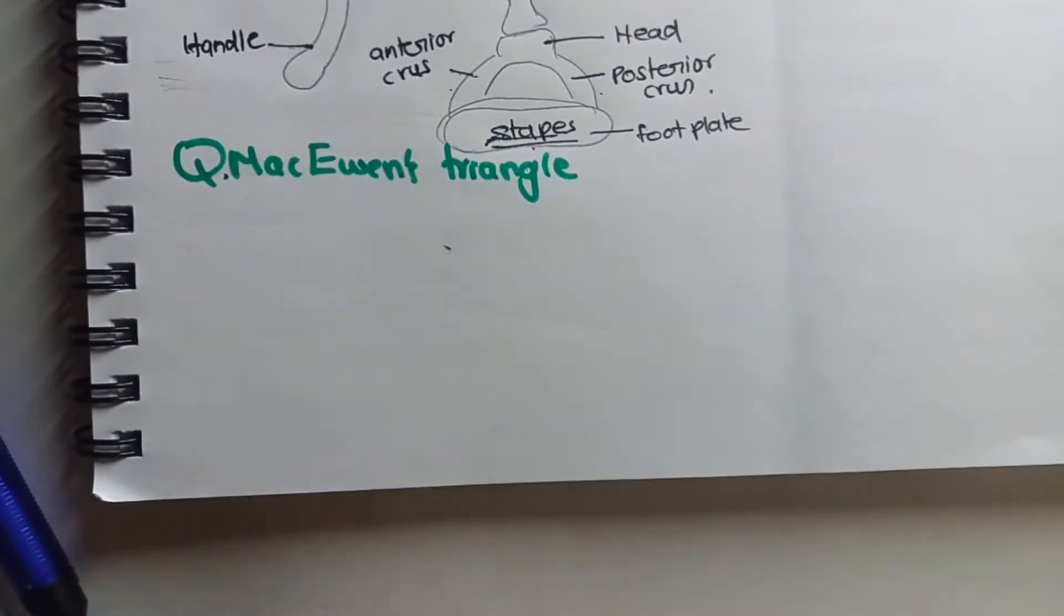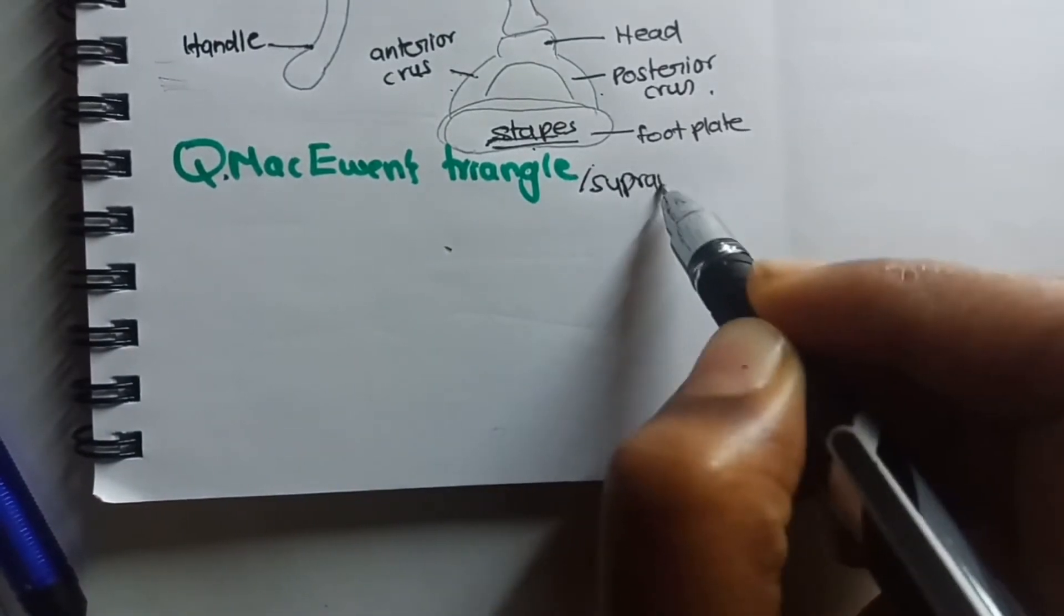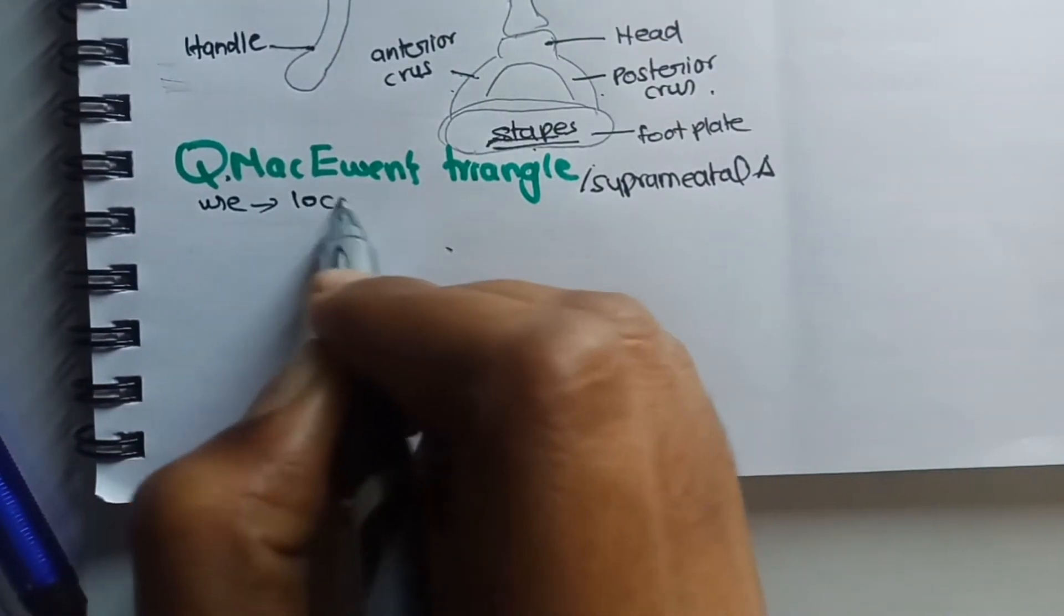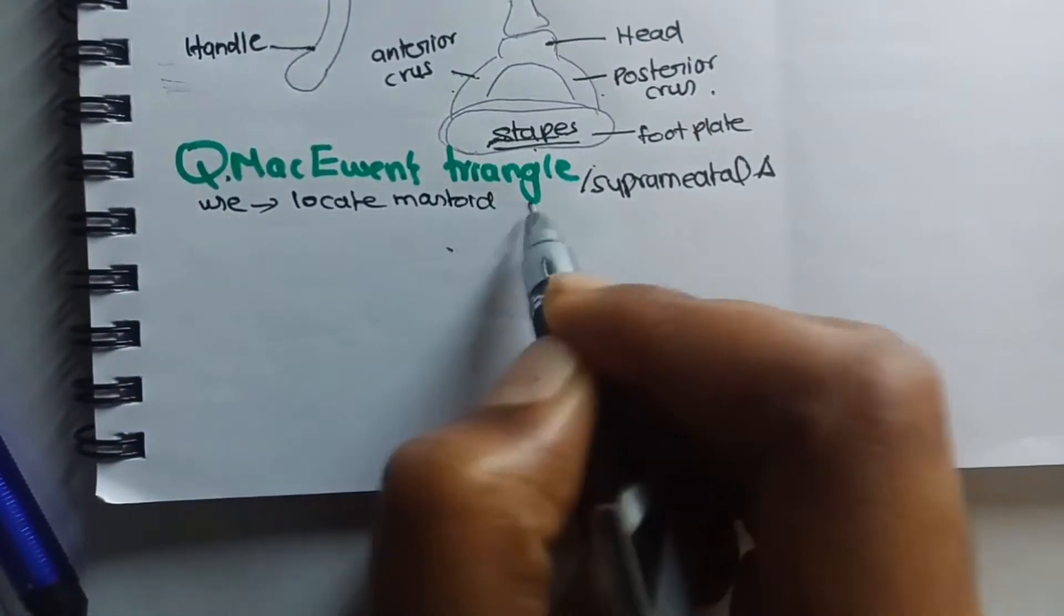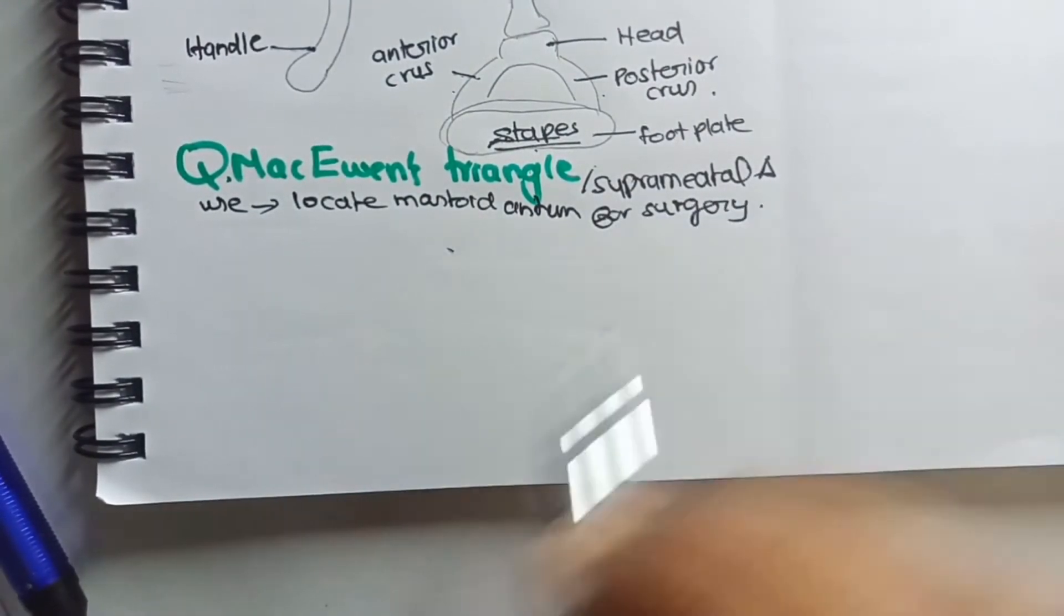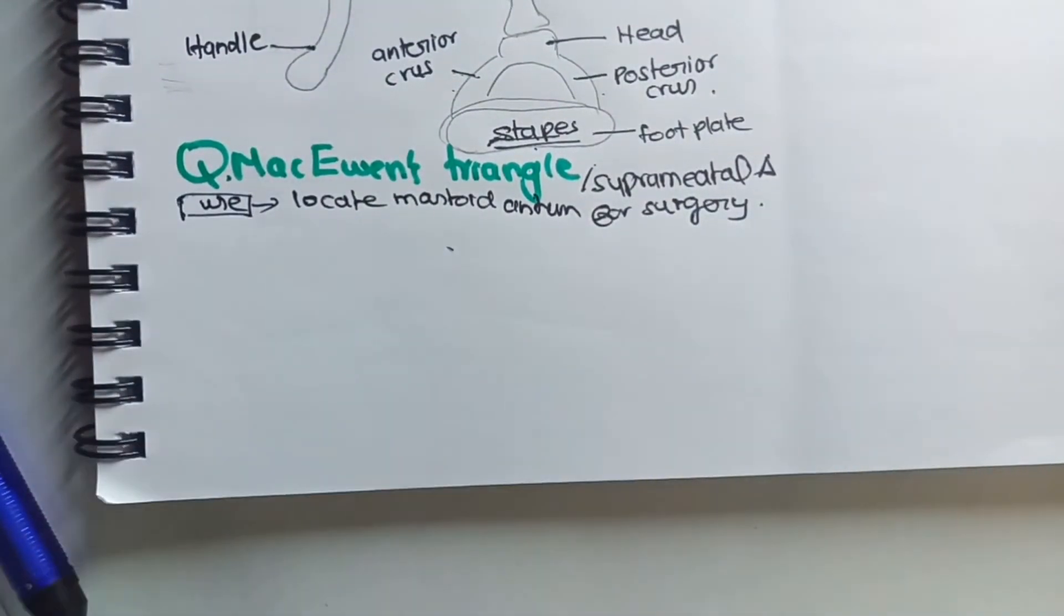Next is the McEwin's triangle, also known as the suprameatal triangle. Why is this important? Because it acts as a landmark to locate the mastoid antrum, and this is used for mastoid antrum surgeries.